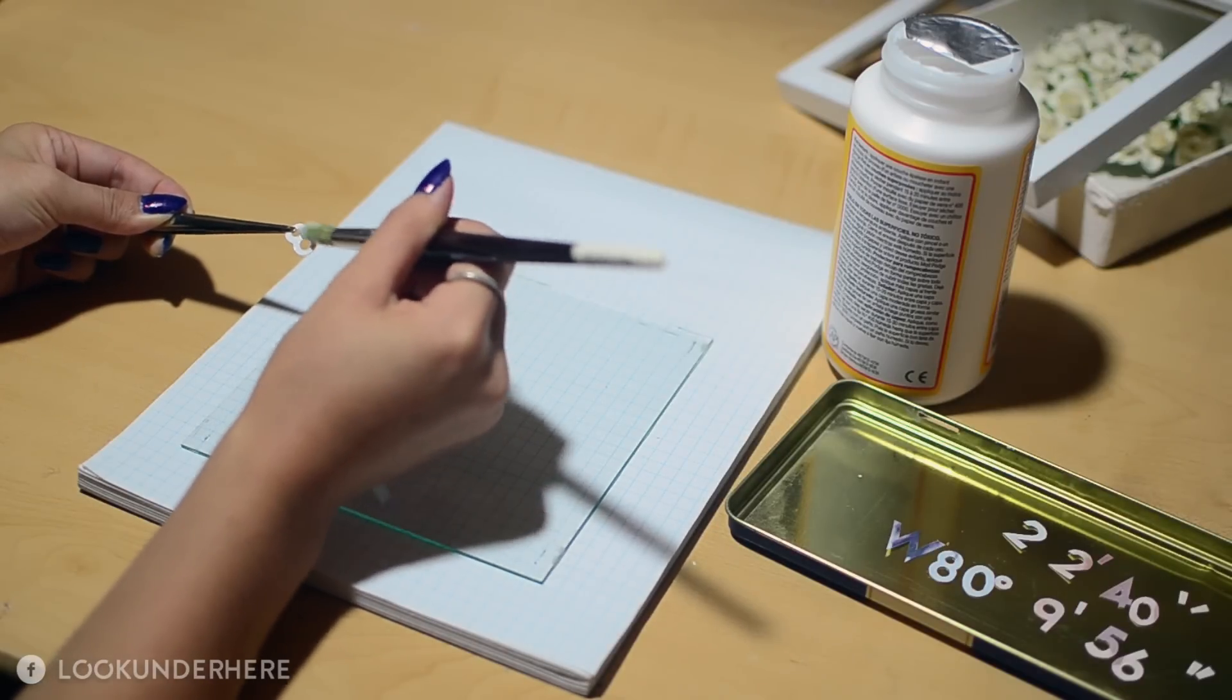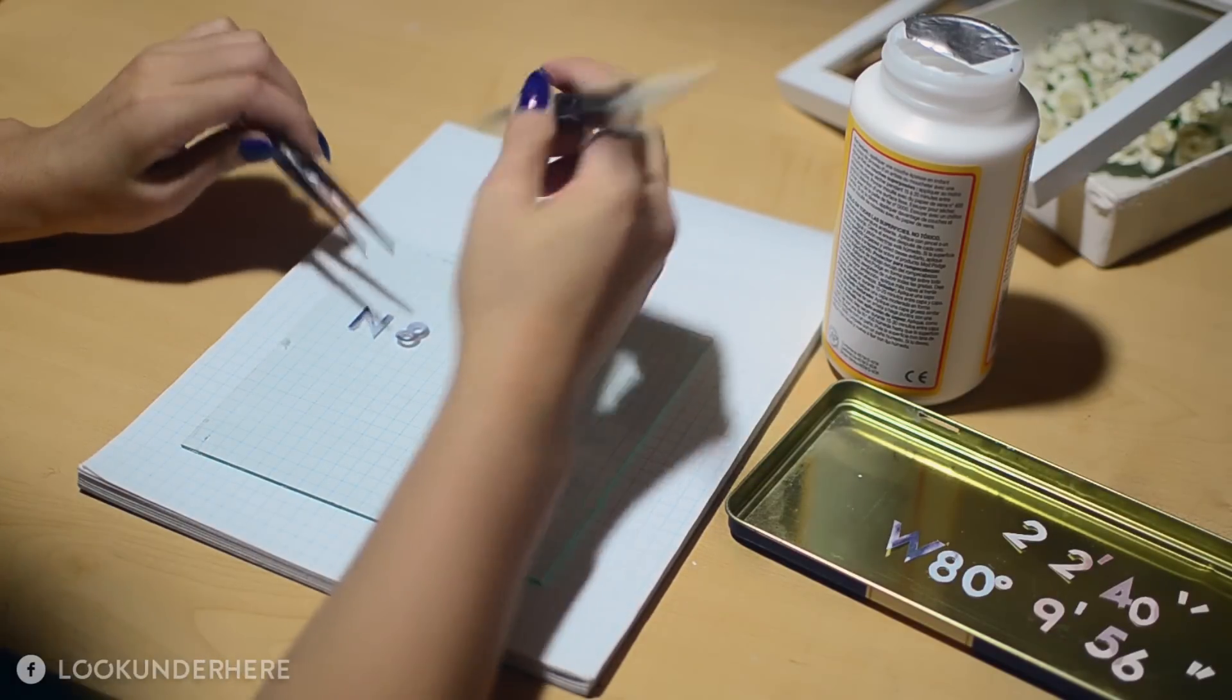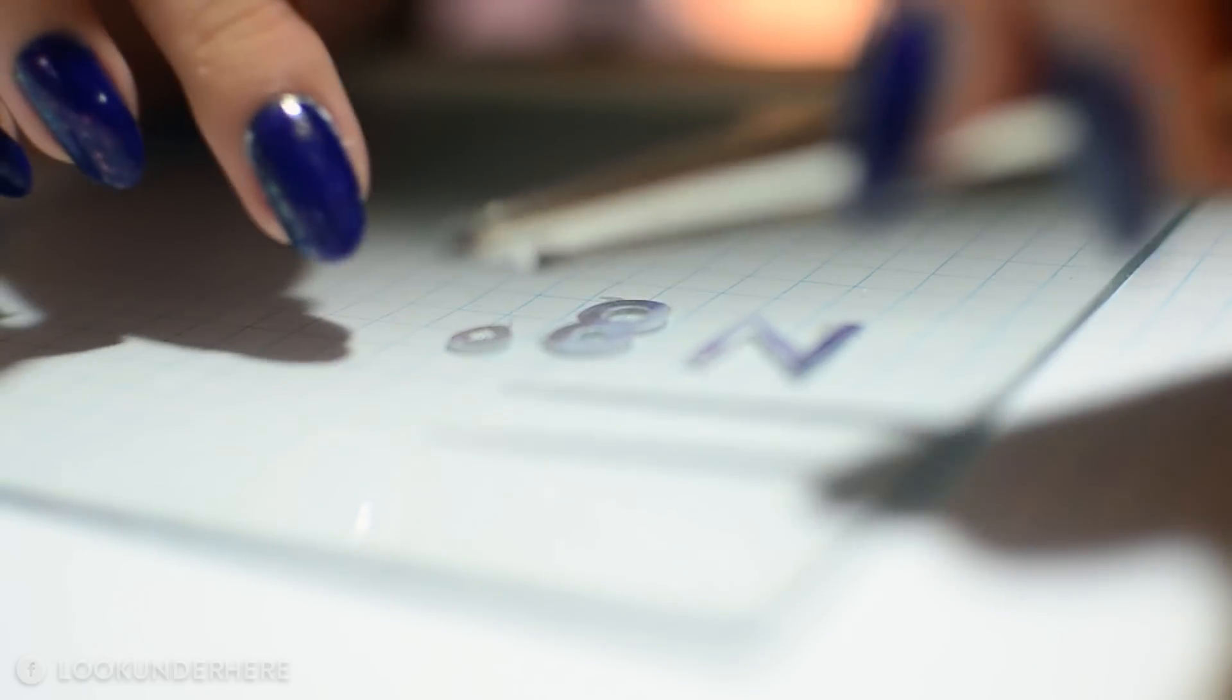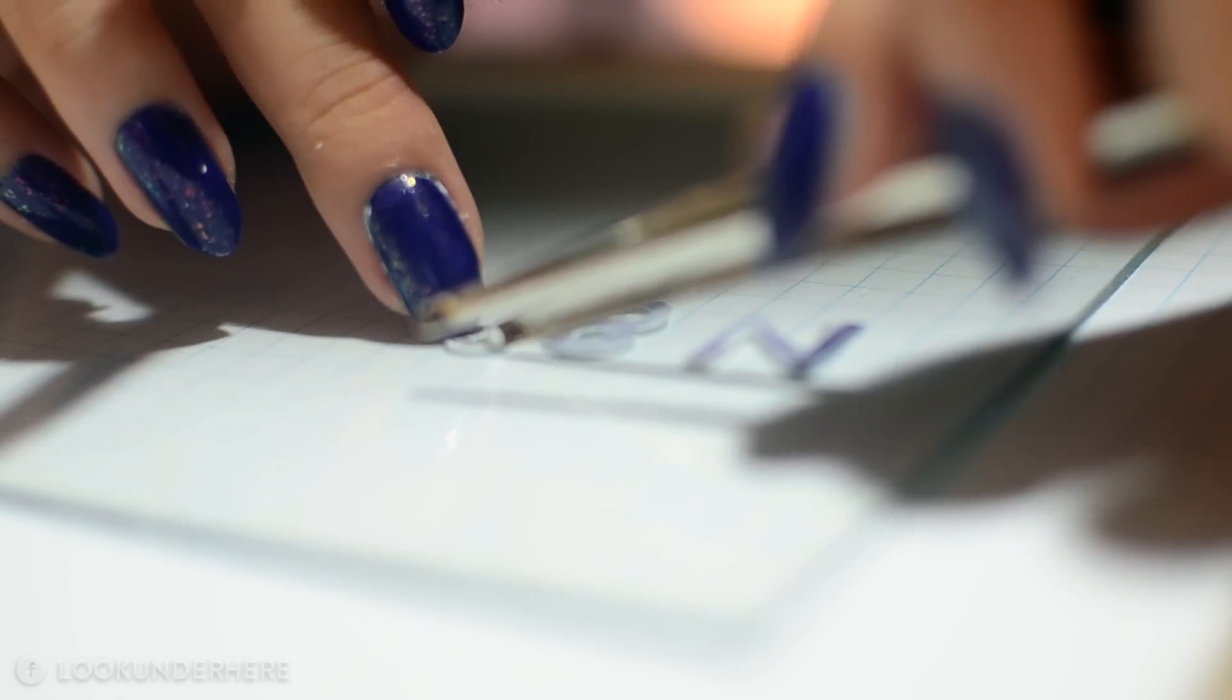Make sure the glass is clean before gluing the coordinates on with Mod Podge. I placed the glass over grid paper to make sure everything was straight, and if you make any mistakes, just wipe it off with a Q-tip soaked with Goo Gone.